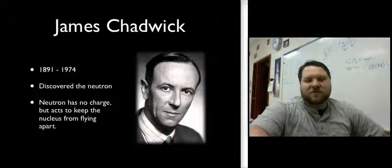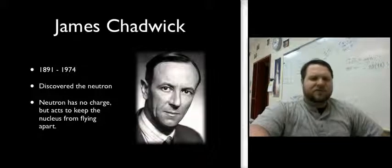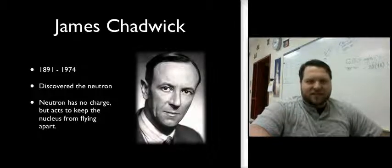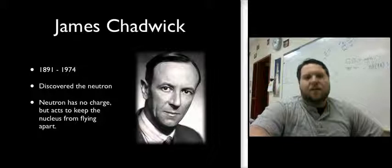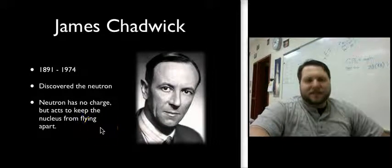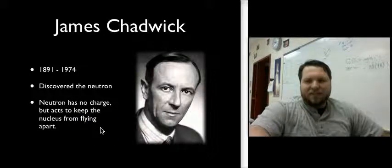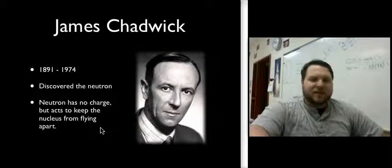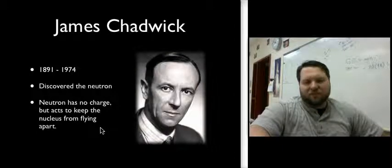And neutrons were really tricky to discover because they have no charge, and so it's very hard to manipulate them to get them to do what you want them to do. But the neutron is found in the nucleus of the atom, and basically, as far as function goes, you can think of it as being almost like a glue that keeps the nucleus from flying apart.